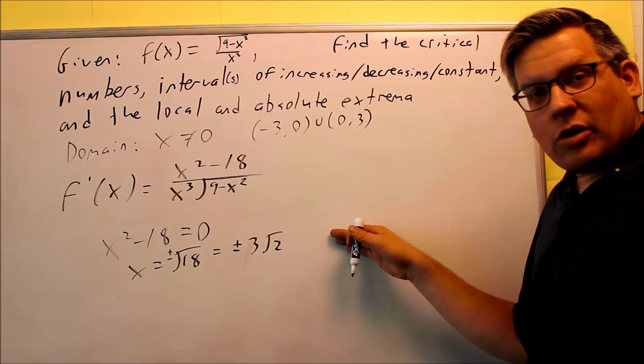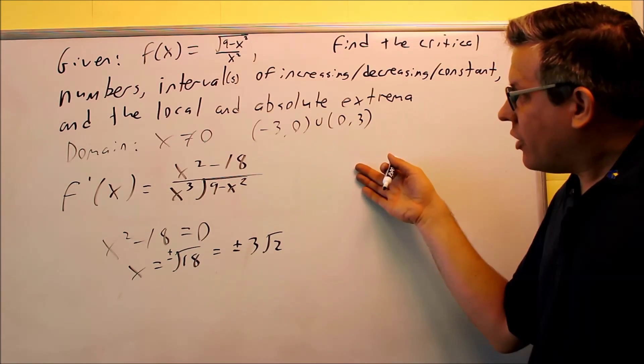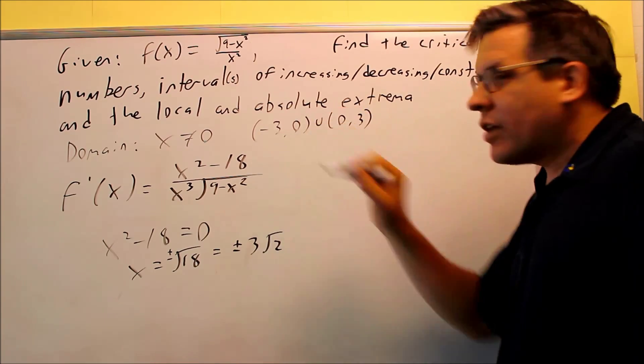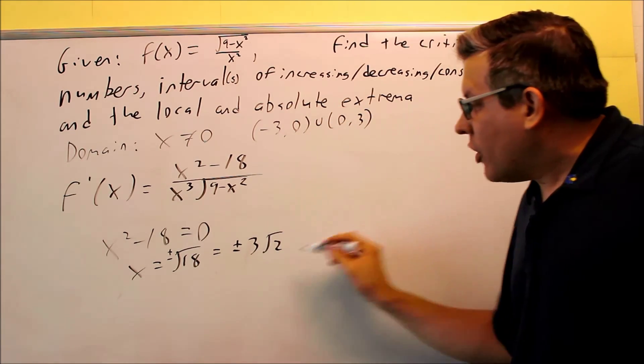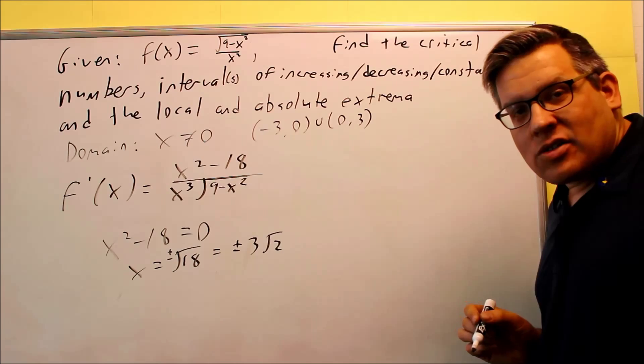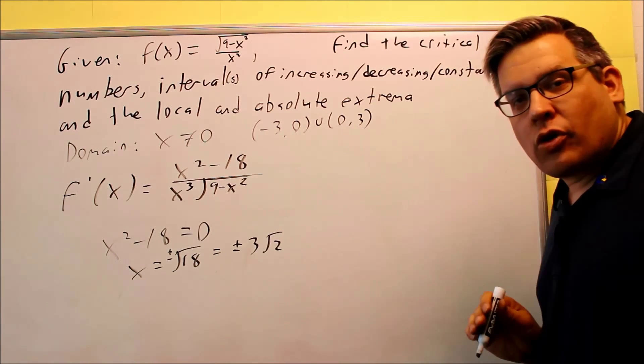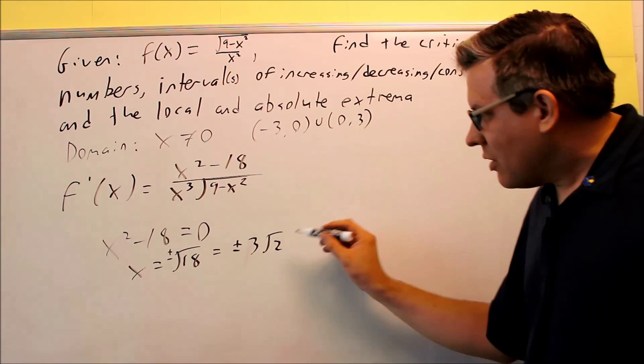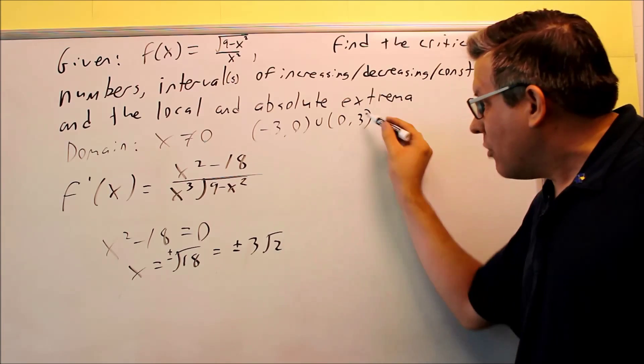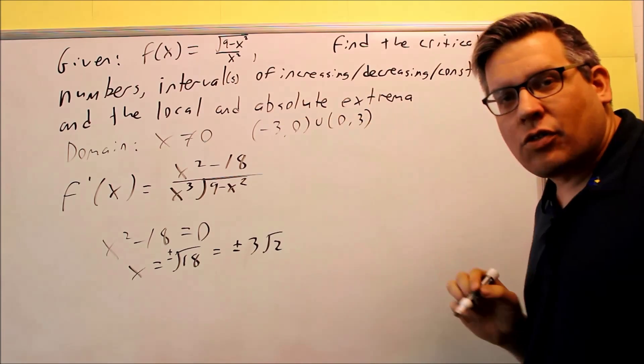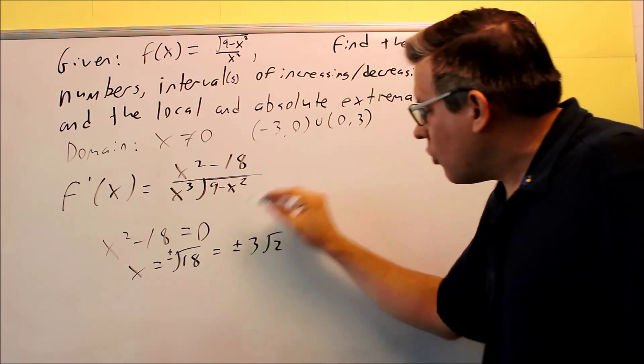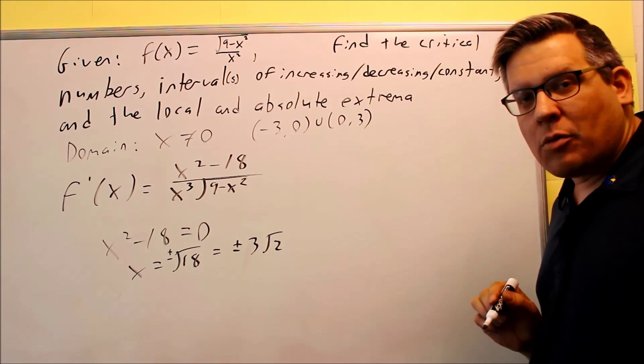Now, we already said earlier that you're not able to put any numbers that are outside of that domain. So therefore, even though we solved and we got that as answers, these are not going to be critical numbers either, because 3 times the square root of 2 is definitely bigger than 3 and it's smaller than negative 3. So therefore, we don't have any critical numbers on this problem.